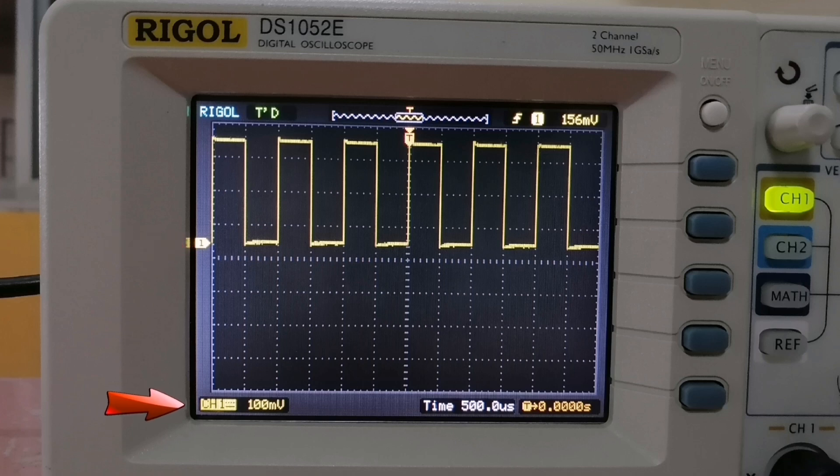This tells the voltage division. Currently, I am at 100 millivolt division. This means that every division you see on the screen will represent 100 millivolts.